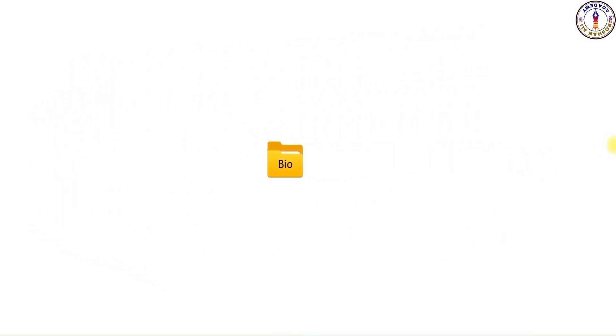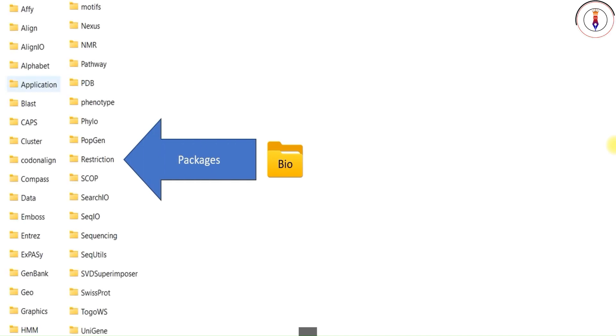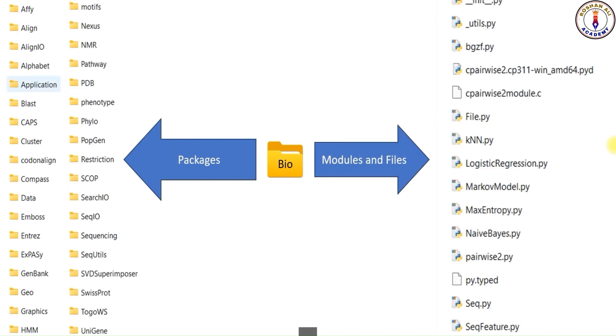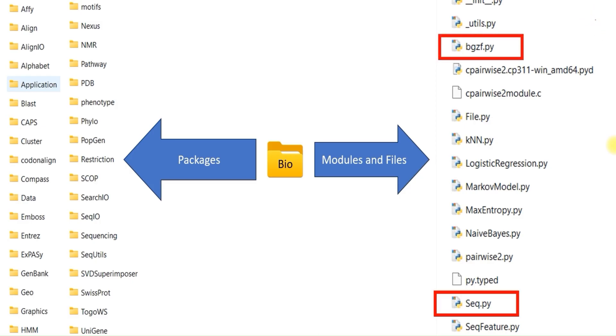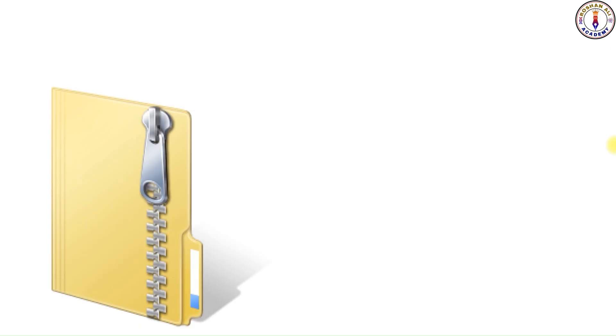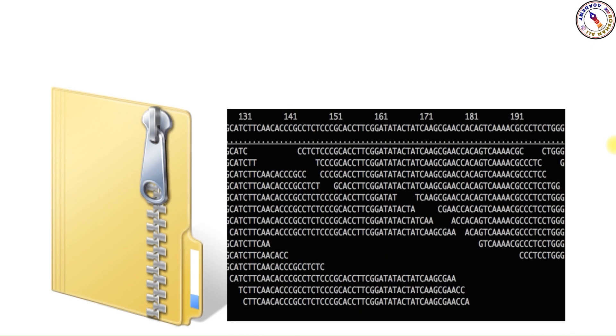Before starting today's lesson, let me remind you that BioPython is a package which is actually a folder with the name bio. This package or folder contains subfolders called subpackages, and it also contains modules and some other files. In our previous lesson, I completed the SeqIO module. Today I am going to teach you about the BGZF module. The bio.bgzf module works with the Blocked GNU Zip Format, BGZF, which is a variant of the gzip format — just like a zipped folder on your desktop. This is particularly important for large bioinformatics files like BAM, that is Binary Alignment Map files. This module allows you to write and read BGZF compressed files.